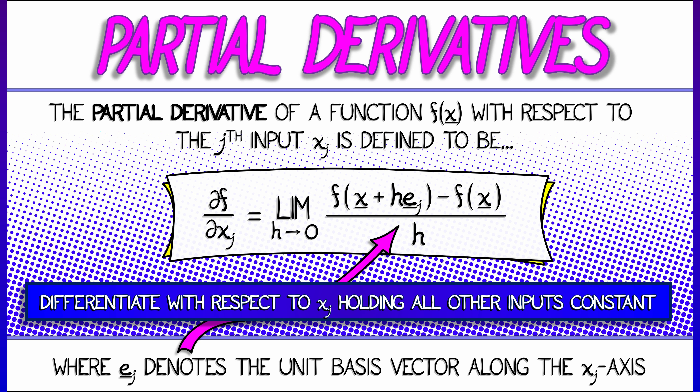What this means, in fact, is that you're keeping all of the inputs the same except for the jth input — that's the only thing that you are varying. And then you're taking the standard plain vanilla definition of a derivative with respect to that one variable. That is why we call it a partial derivative with respect to the jth input, x sub j.